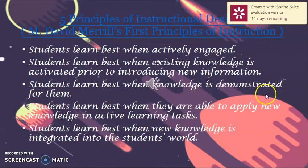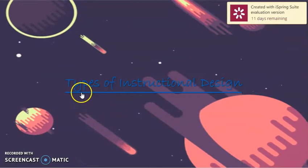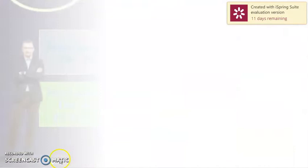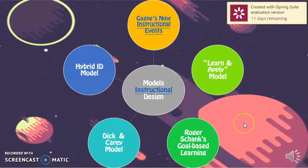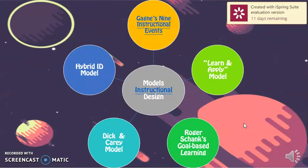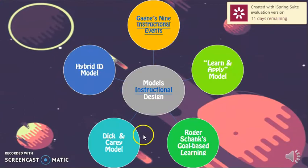Now we have to see types of instructional design. We have five model instructional design. First, Gagner's nine instructional events. Second, ADDIE model. Third, Merrill's first principles of learning. Next, Dick and Carey model. And last, hybrid ID model.